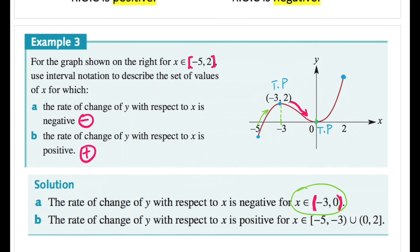For part b, the rate of change of y with respect to x is positive where spidey is climbing up the curve. There are two such sections, separated by another part of the graph, so we use set notation with union. Since x = −5 and x = 2 are endpoints, use square brackets around these values. For the turning points, use round brackets. So the answer uses union notation combining both intervals where the rate of change is positive. That's all for 16a — hope you find this helpful, see you in the next video.